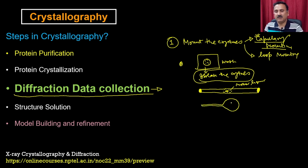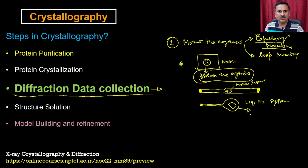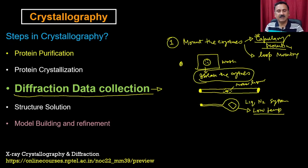Whereas in comparison, when you are going to do the loop mounting, you are going to have a rod on which you are actually going to have the loop. This loop you can be able to place the crystal in between. Now loop mounting requires additional infrastructure where you are actually requiring the liquid nitrogen system so that your crystal is going to be at a very low temperature. That is beneficial because it actually increases the viability of your crystal, because when the crystal faces the X-rays it actually also develops some kind of breakdowns. Keeping it at liquid nitrogen temperature is going to reduce the damages.